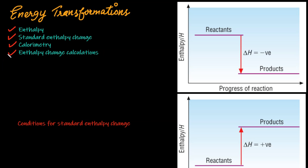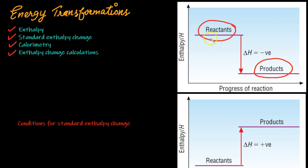In a chemical reaction, energy is required to break the bonds in the reactants, and energy is given out when new bonds are formed in the products. When the bonds in the products are stronger than the bonds in the reactants, the reaction is said to be exothermic, as heat is given out to the surroundings.